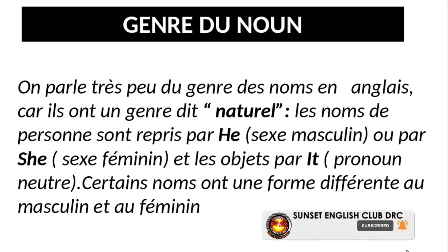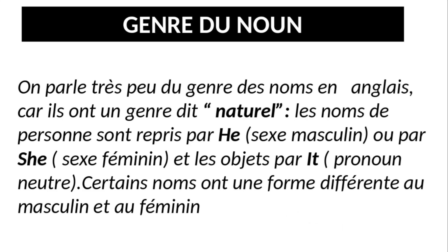Les noms en anglais ont un genre naturel. Les noms de personnes sont repris par HE, qui désigne le sexe masculin, ou par SHE, pour le sexe féminin, et les objets par IT. Certains noms ont une forme indifférente au masculin et au féminin — ce sont les pronoms neutres. Vous comprenez déjà qu'il y a des genres du nom en anglais.